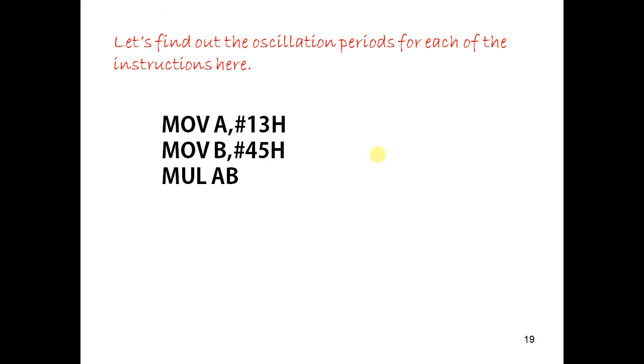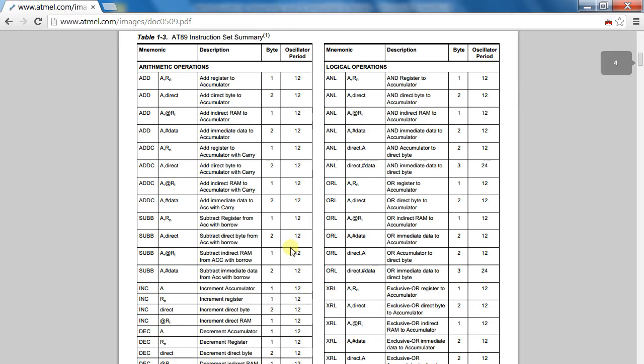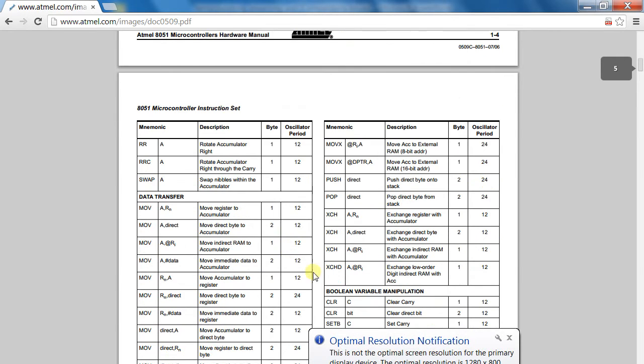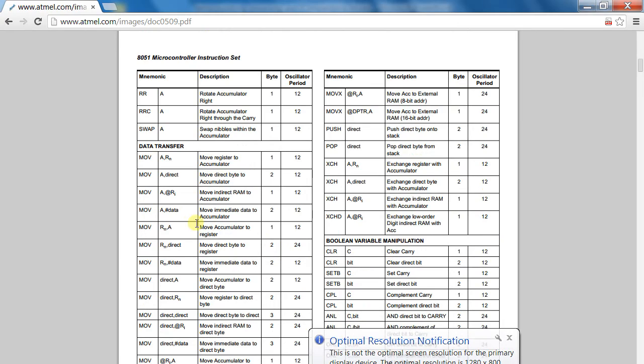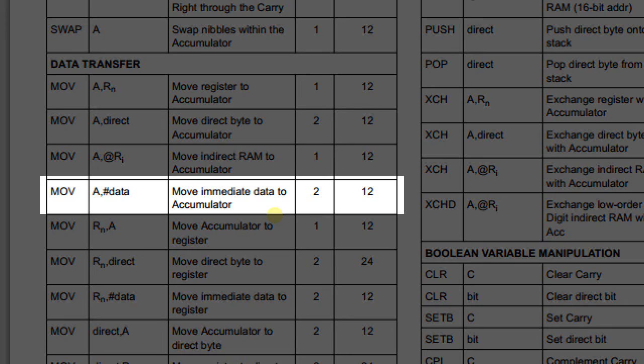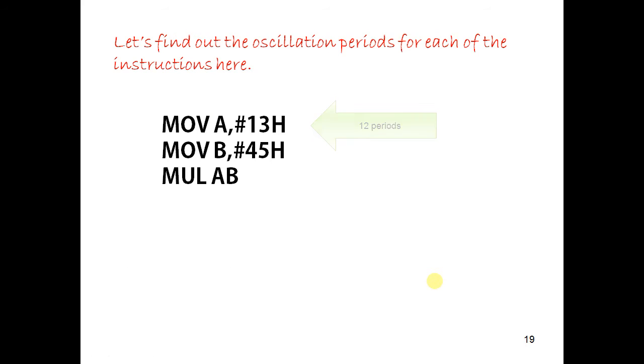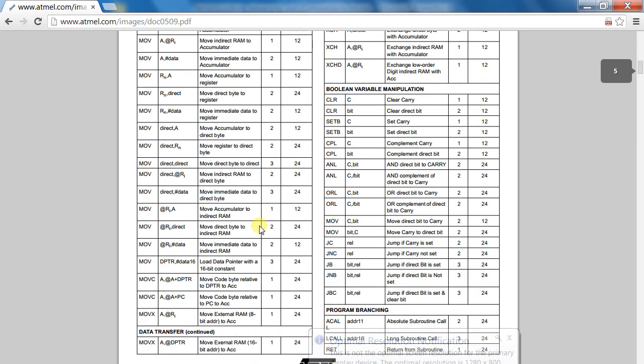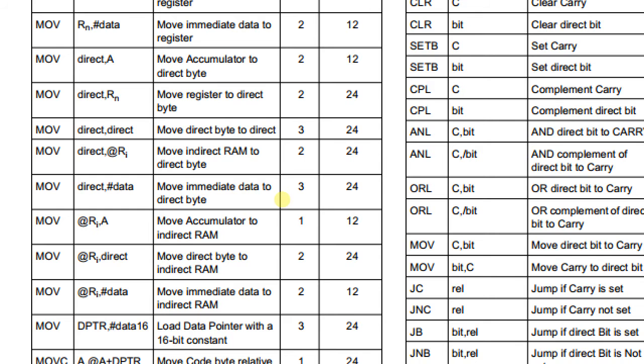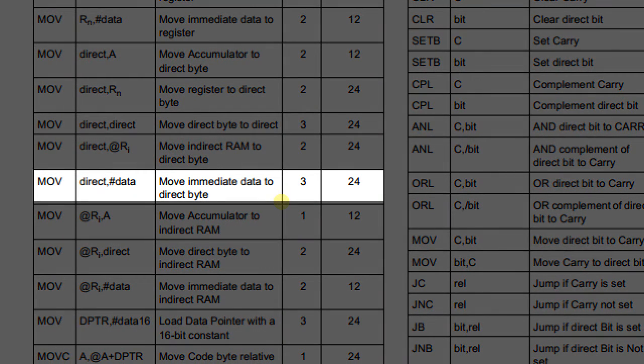Coming back to our program, how much time is needed to execute it? Let's check from the instruction set. The move immediate data to the accumulator takes 12 oscillation periods. The next instruction is move immediate data to direct. This instruction takes 24 oscillation periods.